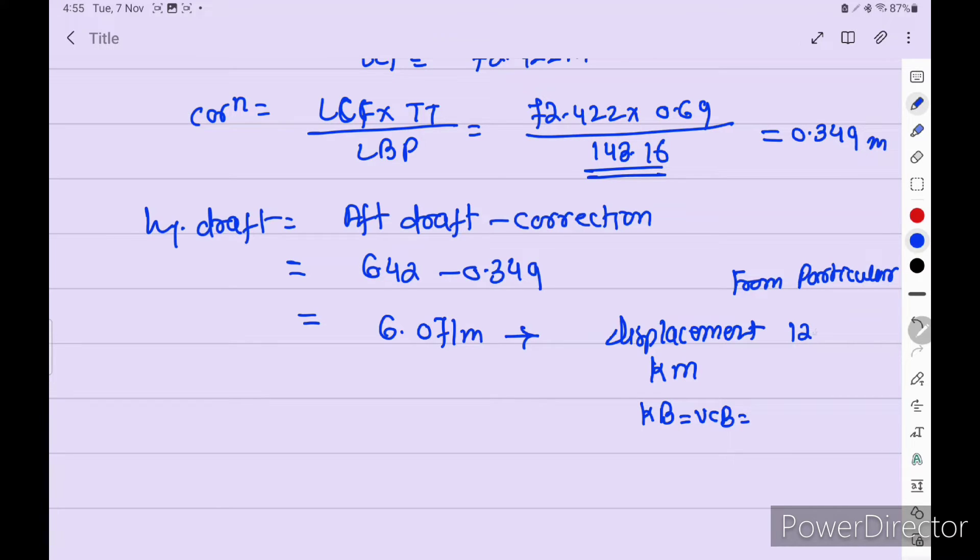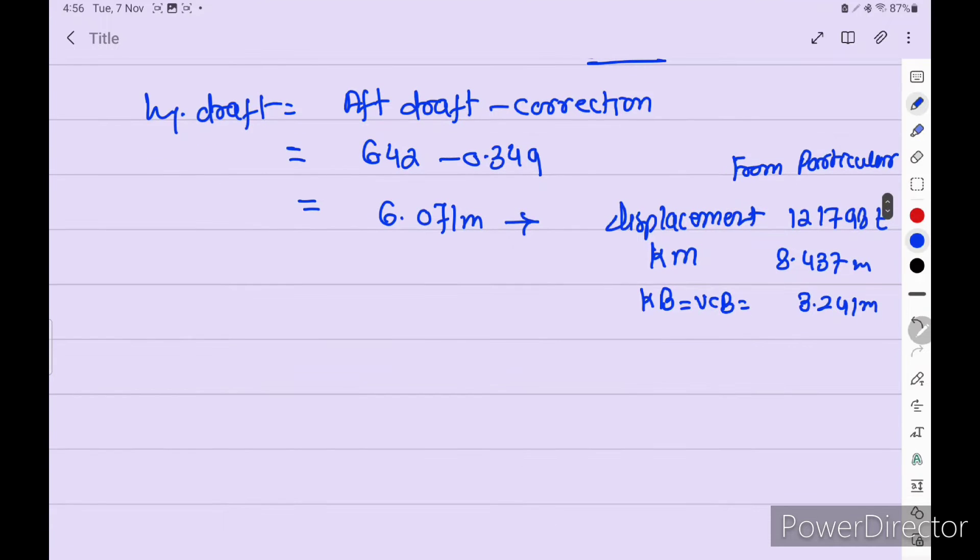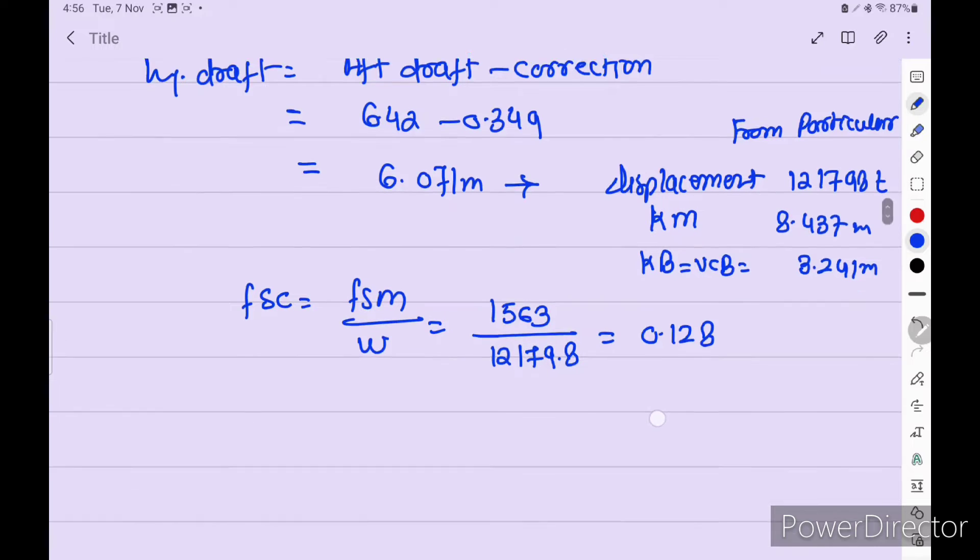So when we form the ambient ship particulars, so get 12179.8, 8.437 and 3.241 meter. Now FSC is equal to FSM upon displacement. So 1563 given in the question, and displacement 12179.8. So we get 0.128.